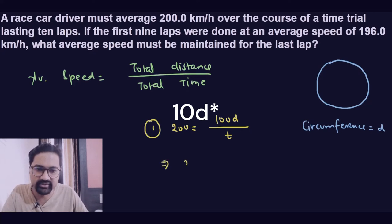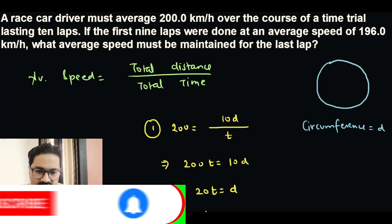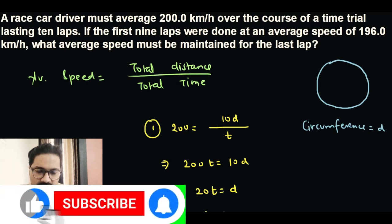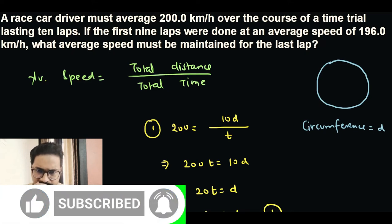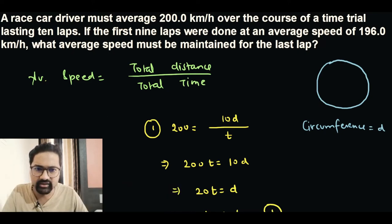Let's multiply both sides with T, so 200T is actually equal to 10D. If we divide both sides with 10, we get 20T is equal to D, or we can flip the equation and we can write D is equal to 20T. Let's call this equation number one.